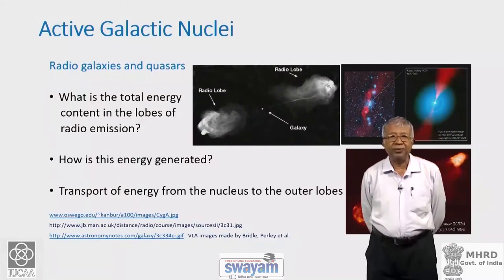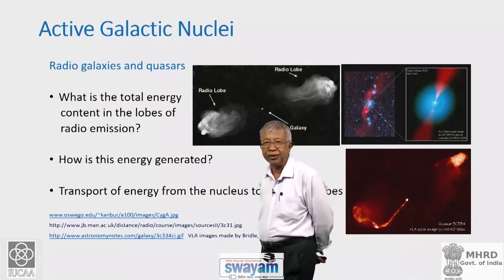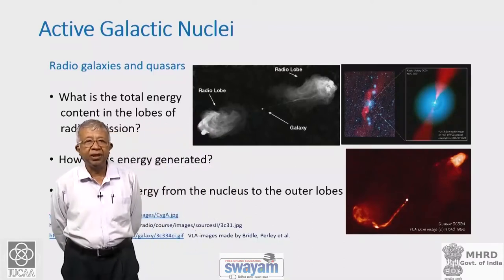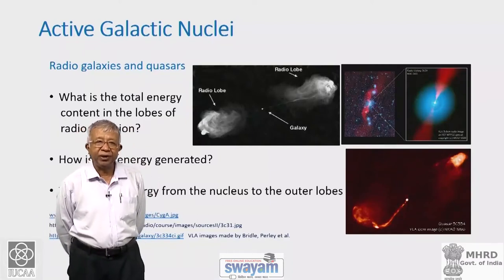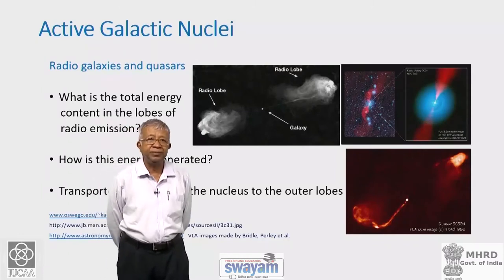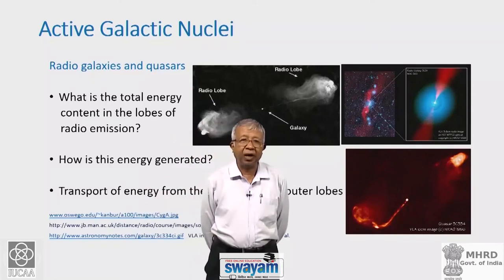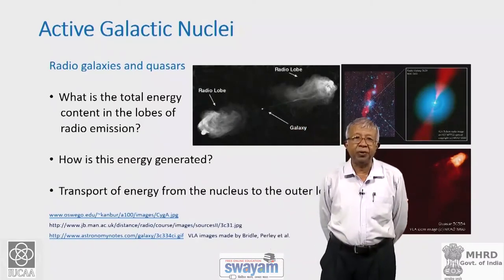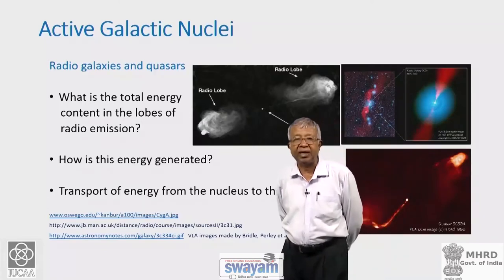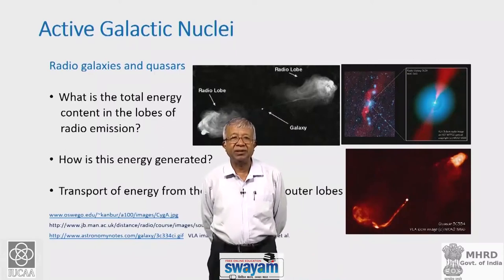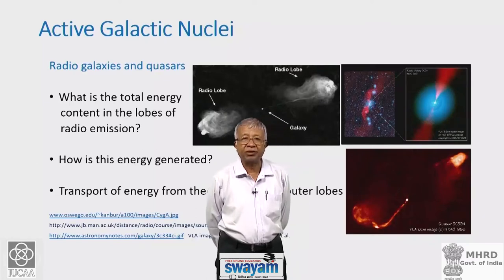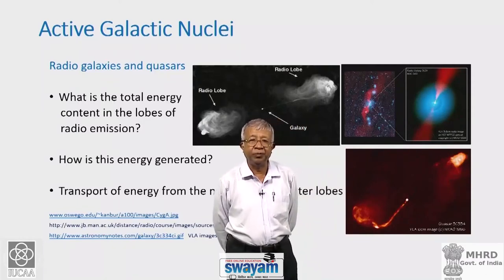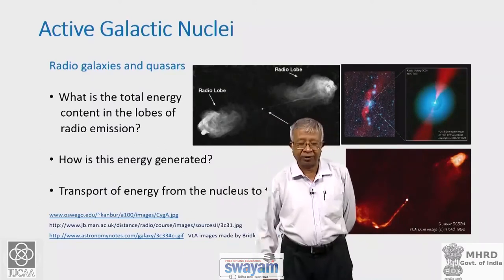This is a recap of the structures met in the previous lecture. The key questions are: what is the total energy content in these huge lobes of radio emission, how is the energy generated, and how is it transported over distances extending to several megaparsecs? Examples of both Fanaroff-Riley class 2 galaxies — high luminosity with hot spots at the outer edges — and FR class 1 galaxies — with more symmetric, dissipative jets ending in diffuse plumes rather than bright hot spots — are shown.